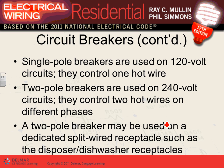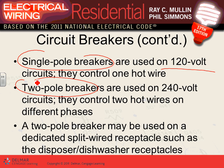Single-pole circuit breakers are used for 120 or 277 volts — in dwellings we use them for 120. Two-pole circuit breakers in dwellings are used for 240. Three-pole circuit breakers are typically used for three-phase systems.